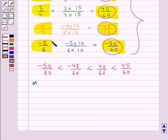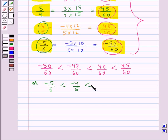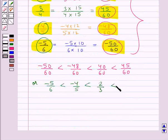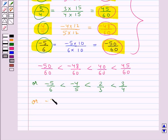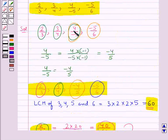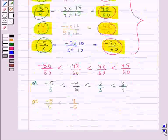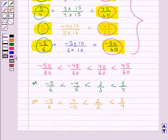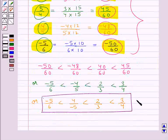We can write this in original form: minus 50 upon 60 equals minus 5 upon 6, and minus 48 upon 60 equals minus 4 upon 5. So minus 5 upon 6 is less than minus 4 upon 5, which is less than 40 upon 60 which equals 2 upon 3, which is further less than 45 upon 60 which equals 3 upon 4. Since the original number was 4 upon minus 5 — expressed with a positive denominator as minus 4 upon 5 — we write: minus 5 upon 6 is less than 4 upon minus 5, which is less than 2 upon 3, which is less than 3 upon 4. This is the ascending order of the given rational numbers.